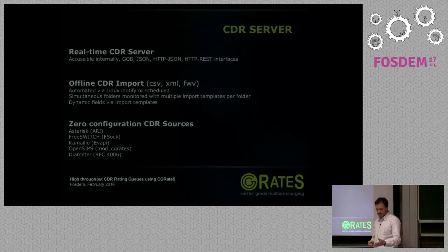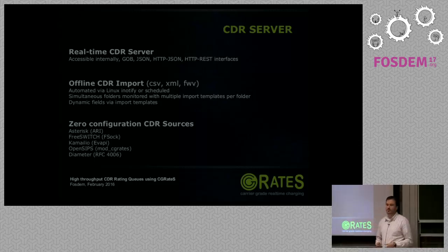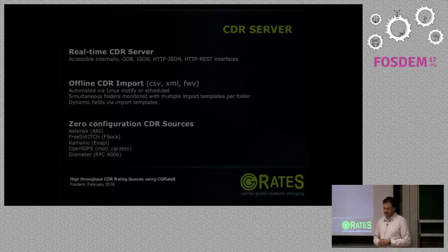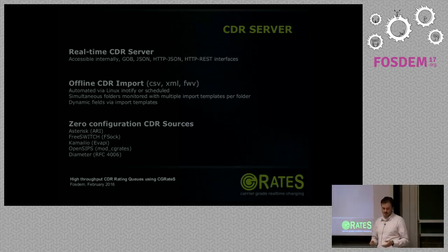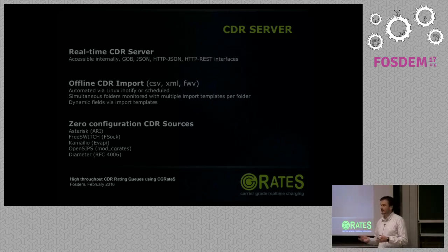The CDR server is the component responsible for CDRs. It's accessible via a number of different APIs — you can push CDRs into CG Rates via JSON, HTTP REST, GOB, and others. You can also push offline CDR imports: if you receive CDRs from your suppliers over CSV, XML, or fixed-width value files, all are supported. It's automatic — inotify tells us when a CDR arrives in a folder and we pick it up automatically, close to real time. You can monitor various folders with different import templates and logic per folder.